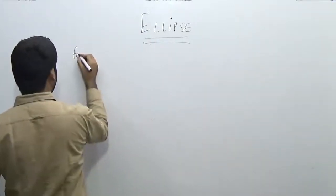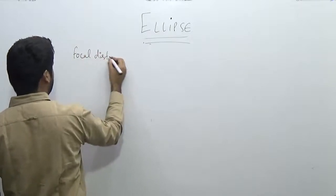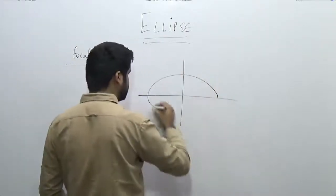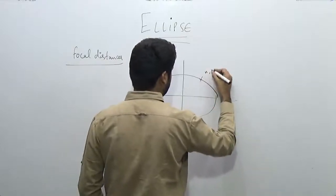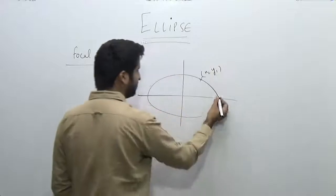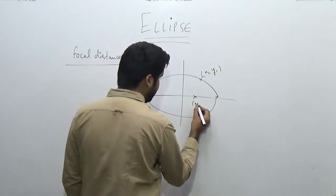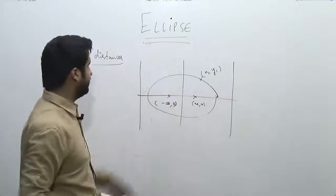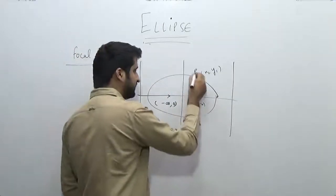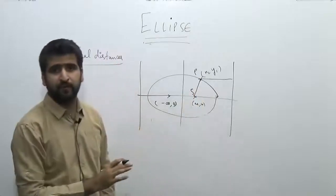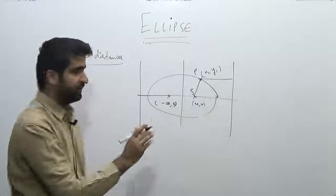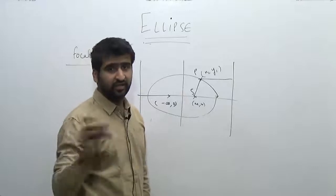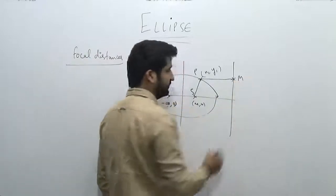Now I will discuss focal distances — you will easily understand the concept. Focal distances are pretty much clear by the heading: these are the two distances from the foci. If the point is x₁, y₁, these are the two foci: (a, 0) and (-a, 0), and this is the directrix. Now I need to find the two focal distances. Instead of finding the focal distances by the distance formula — which would be a very long way — I need to see the shortcut.